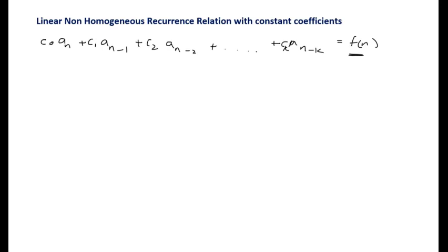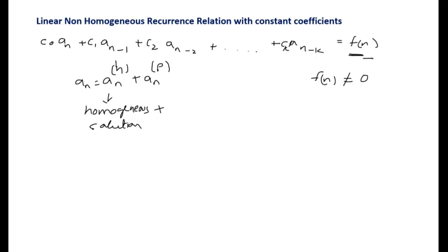The linear non-homogeneous recurrence relation with constant coefficients has a specific format. For non-homogeneous recurrence relations, F(n) is not equal to 0. The solution is the homogeneous solution plus the particular solution (ANP). There are different types of cases based on F(n).